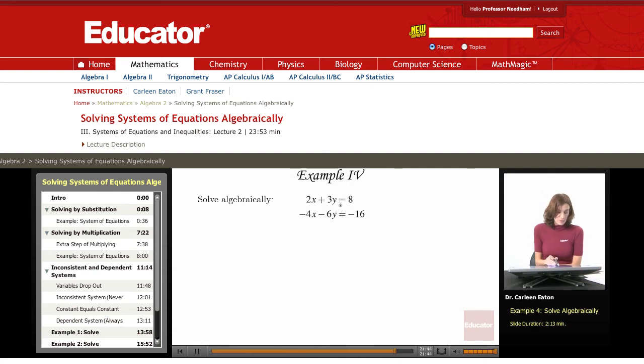Here I have 2x plus 3y equals 8, and negative 4x minus 6y equals negative 16. Since there's no variable with a coefficient of 1, I'm going to use elimination, but again, I'm going to have to do a little work to get the opposite coefficients.